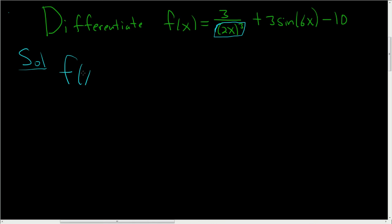f of x equals—now keep in mind, 2x quantity cubed can be written as 2 cubed times x cubed, which is 8x cubed. So let's write this as 3 over 8x cubed plus 3 sine 6x minus 10.